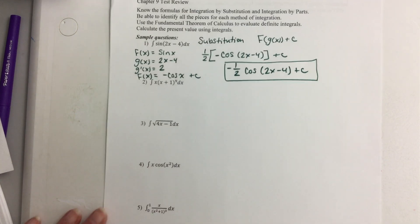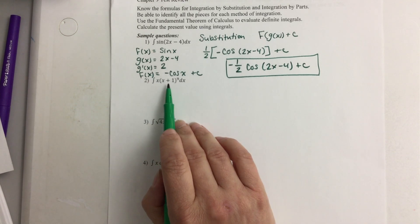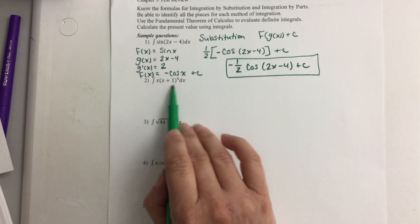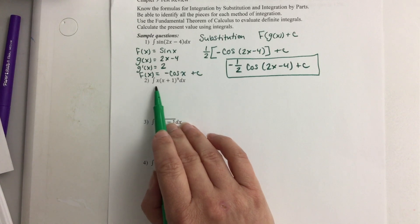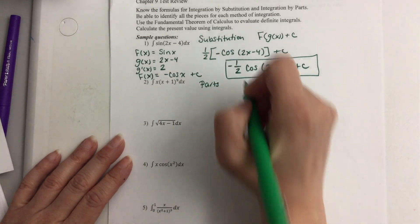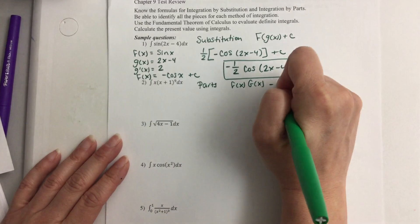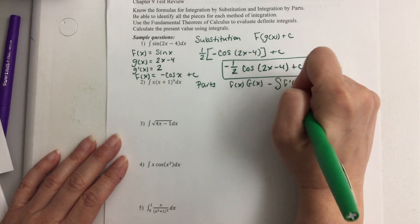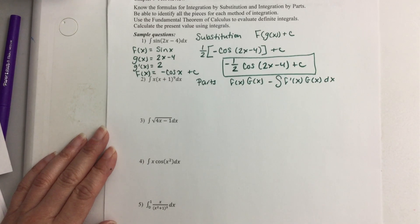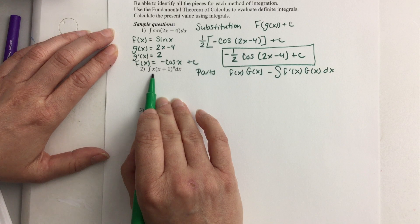Number 2. We have to do integration by parts. If I try to do substitution, f of x would be x to the power of 9, and g of x would be x plus 1. The derivative of x plus 1 would be 1. I can't change a number into a letter by multiplying by a constant, so this one has to be integration by parts. The formula is f of x times the antiderivative of g of x, minus the antiderivative of the derivative of f of x times the antiderivative of g of x, dx.